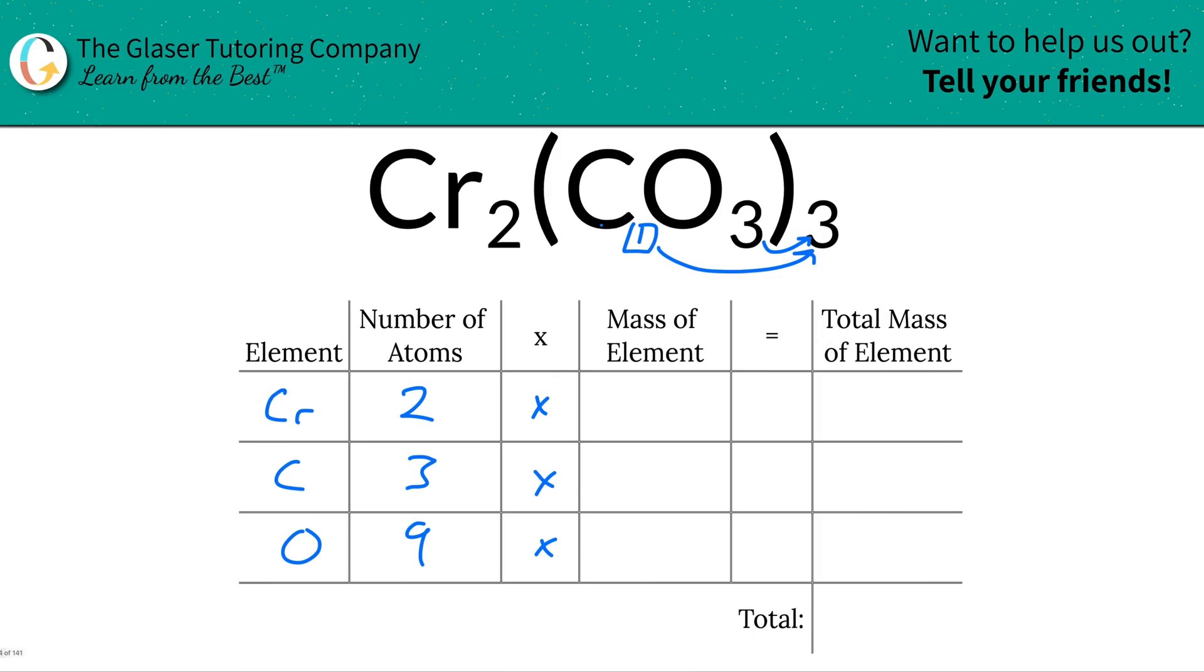I'm just going to plug in the magnitudes here. So the chromium atom weighs about 52 units of mass, carbon is 12.01, and oxygen is going to be 16.